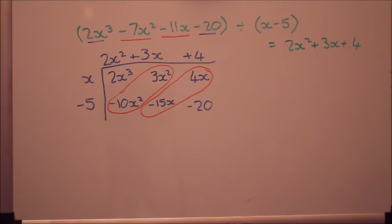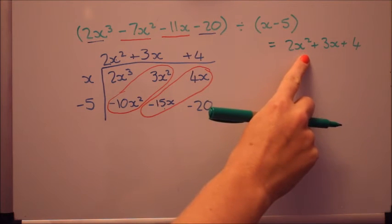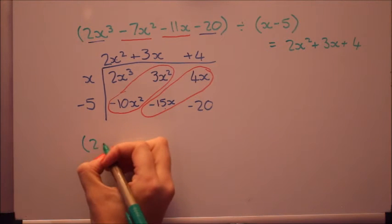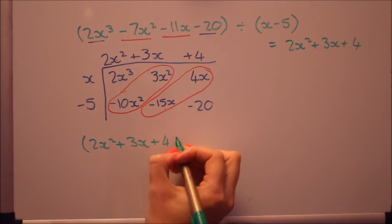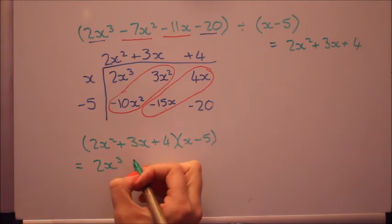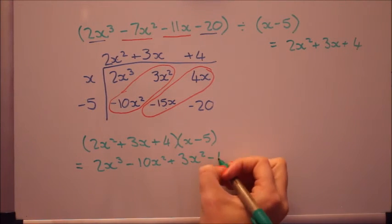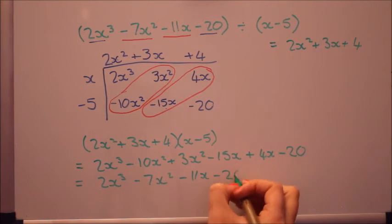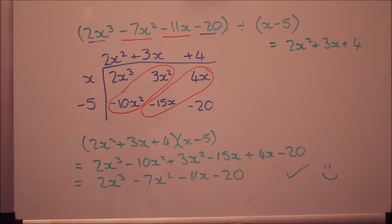Now you can check these. We can do what we did at the beginning of this video. If that divided by that gives us that, then that times that should give that. So you can quickly check if that's right. Have a go at multiplying those together. Brilliant. I always love it when it works.